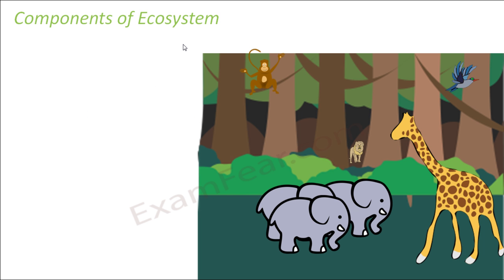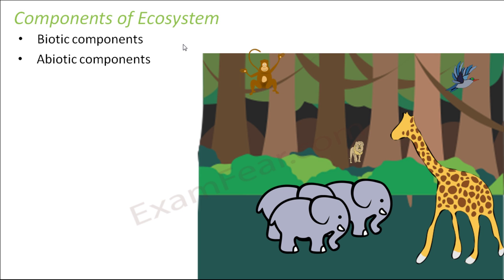Now we will talk about components of ecosystem, which is very important. Ecosystem is all about interaction between living and non-living components. Broadly there are two components of ecosystem: one is the biotic component and the second is the abiotic component. The word 'bio' means life, so the living components are called biotic components, and abiotic means non-biotic, that means non-living components.